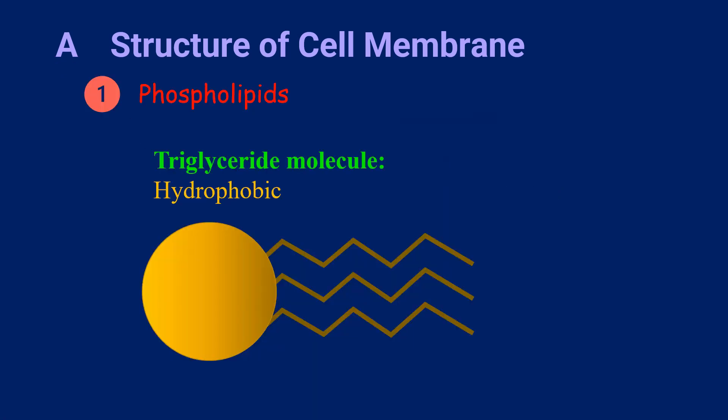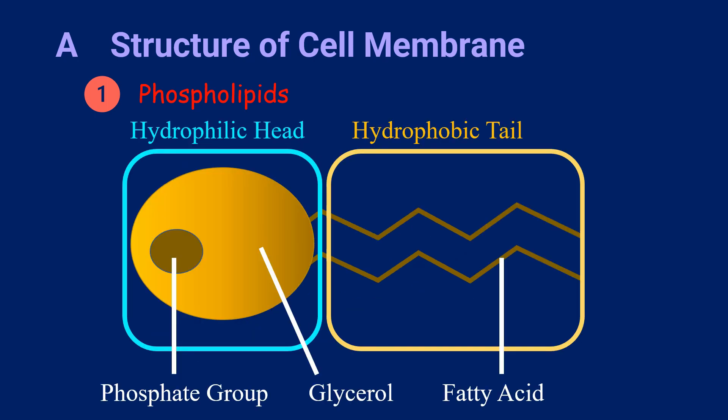Let's have a look at the features of phospholipid molecules. A triglyceride molecule is hydrophobic, made of glycerol and three fatty acids. However, in a phospholipid molecule, one of the fatty acids is replaced by the phosphate group. Since the phosphate group is polar, the head of the phospholipid molecule is hydrophilic, meaning water-loving. The tail will continue to be hydrophobic, meaning water-hating.